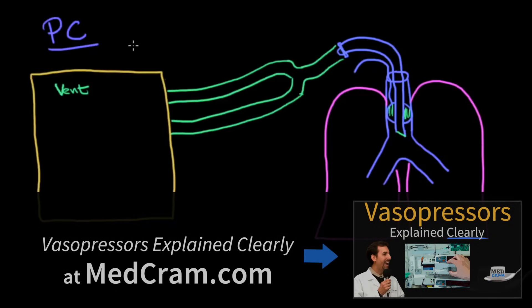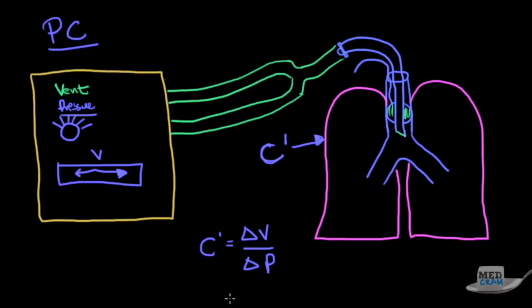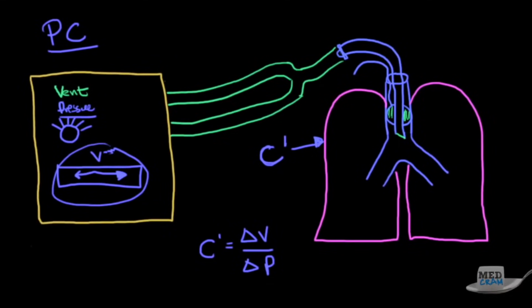Now let's make this converse to pressure control. In pressure control what we're doing is we're setting a pressure. We're going to decide how much pressure we're going to ventilate this patient with. If we're setting a pressure there is a specific compliance to this lung depending on what state it is in. If the compliance of this lung is very low then you can imagine we're going to have lower volumes. However, if the compliance of this lung is very high then we're going to have higher volumes because compliance is equal to the change in volume over the change in pressure.